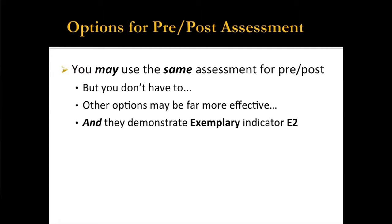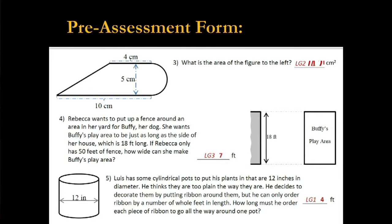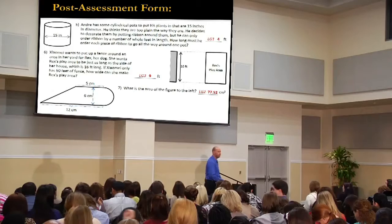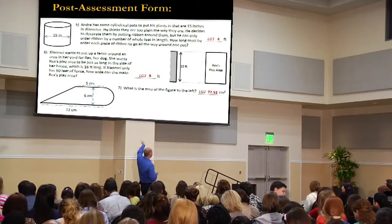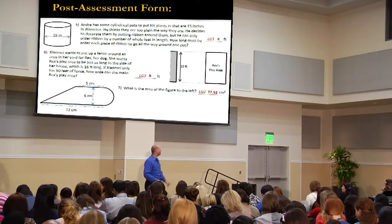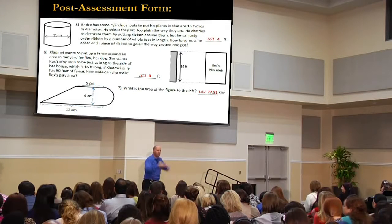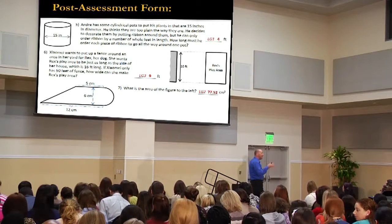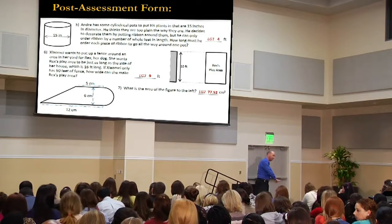You may use the same assessment, but you don't have to — there are better ways. Small changes can make a huge difference. I've changed the order and I've changed the numbers, so there are different measurements but they're doing the same calculation. I also changed the name of the dog in the play area so I could tell which was which. Very simple changes to ensure that any increase I see on the post-assessment is due to student learning and not memory of the pre-assessment.